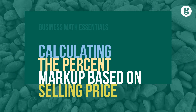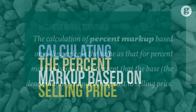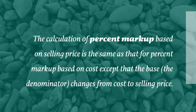For this course, the markup is calculated as a percentage of the selling price, therefore selling price will be the base and represent 100%. This practice is used by most retailers because most retail records and statistics are kept in sales dollars. The calculation of percent markup based on selling price is the same as that for percent markup based on cost, except the base — the denominator — changes from cost to selling price.